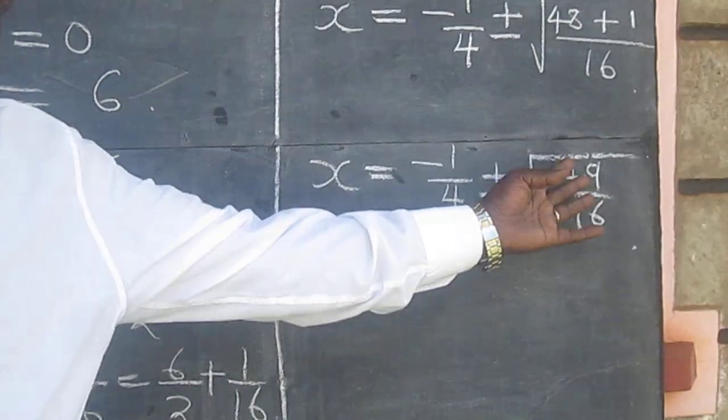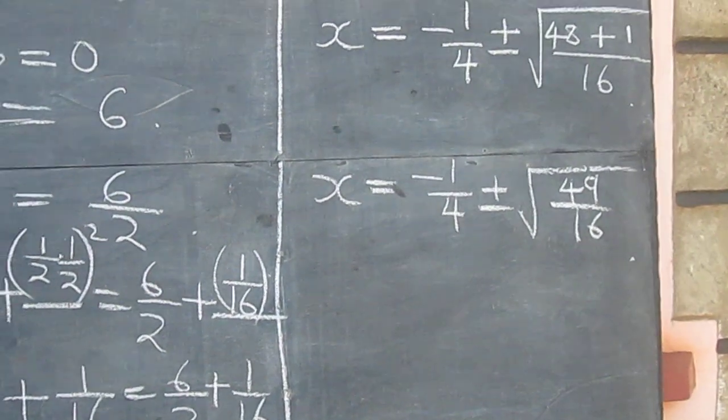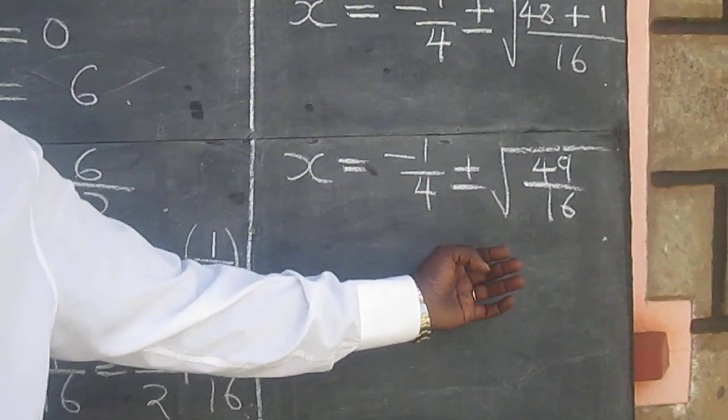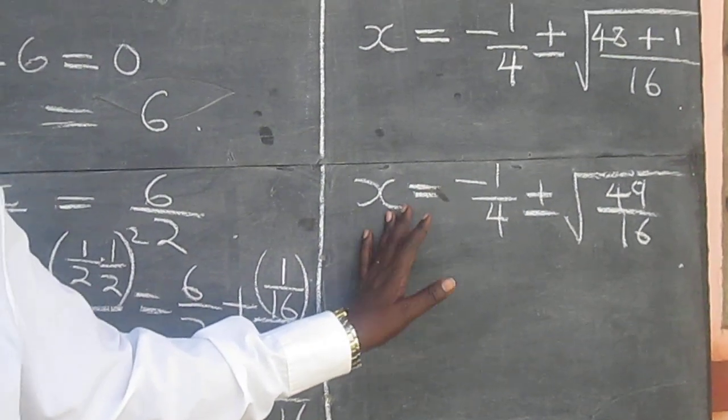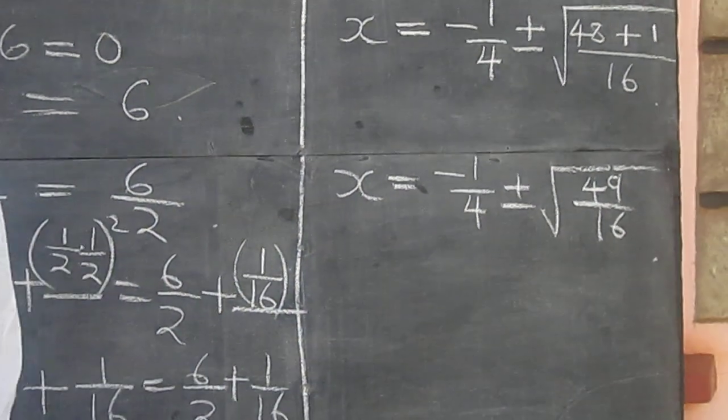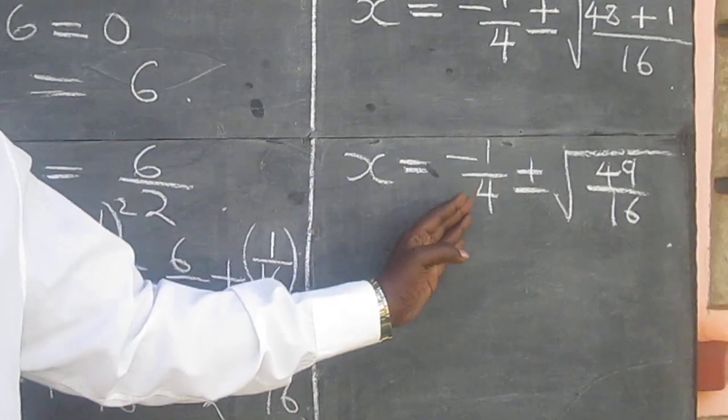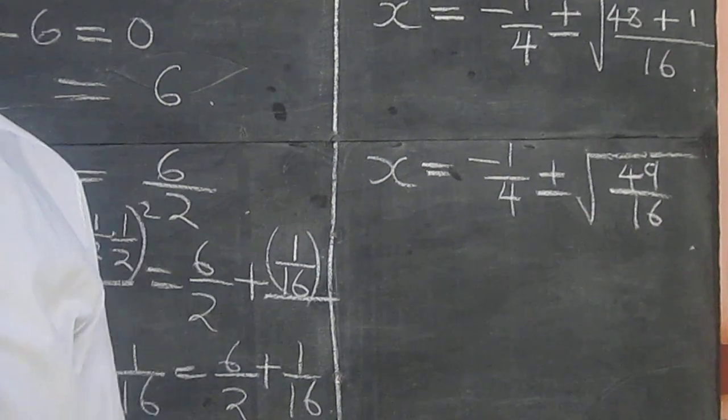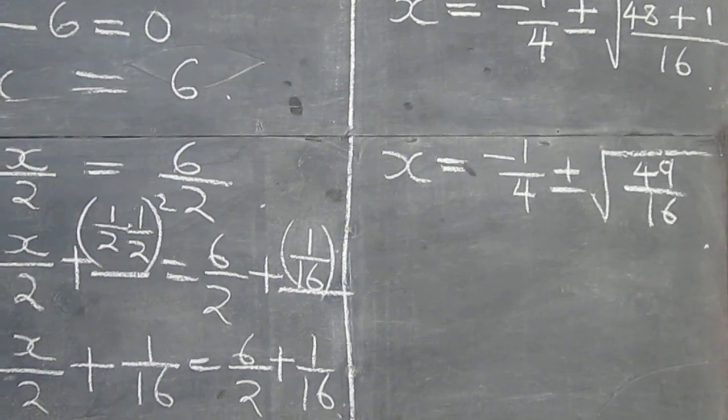The square root of 49 over 16 will be 7 over 4. And therefore the values of x are minus a quarter plus 7 over 4, or minus a quarter minus 7 over 4. Let's see what that simplifies to.